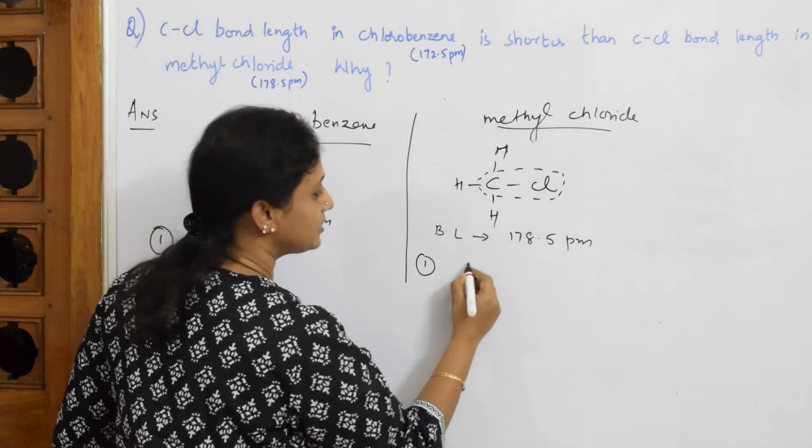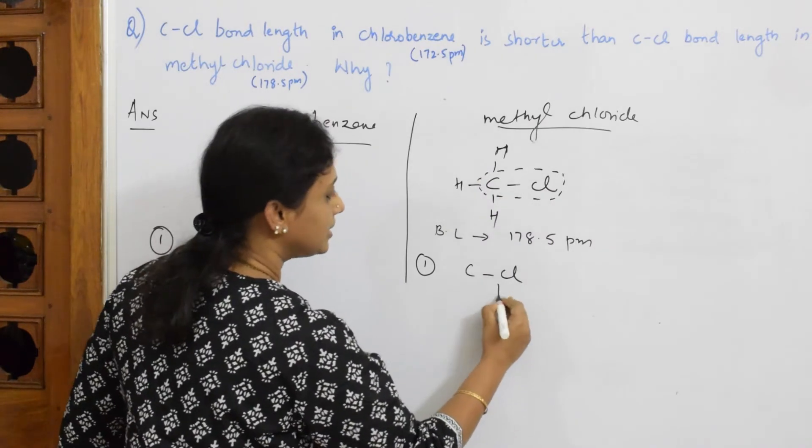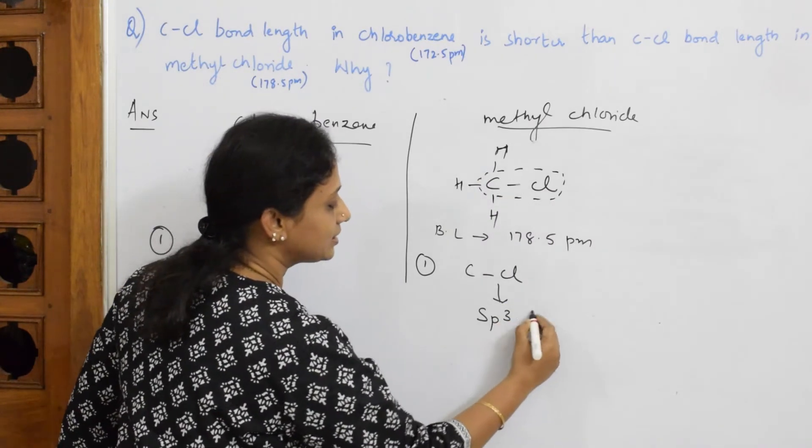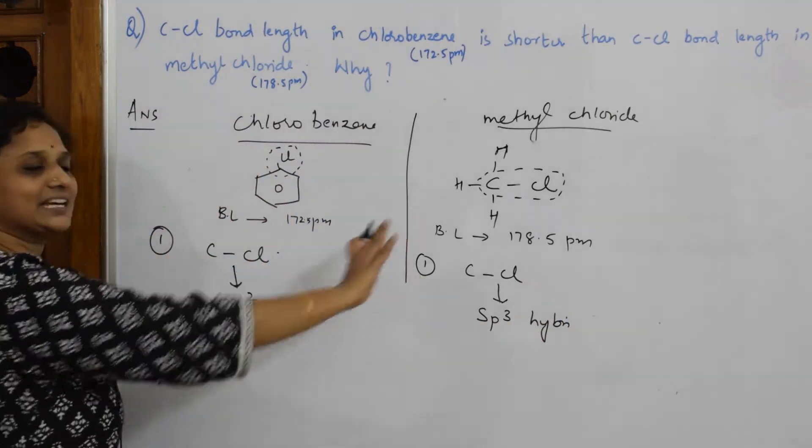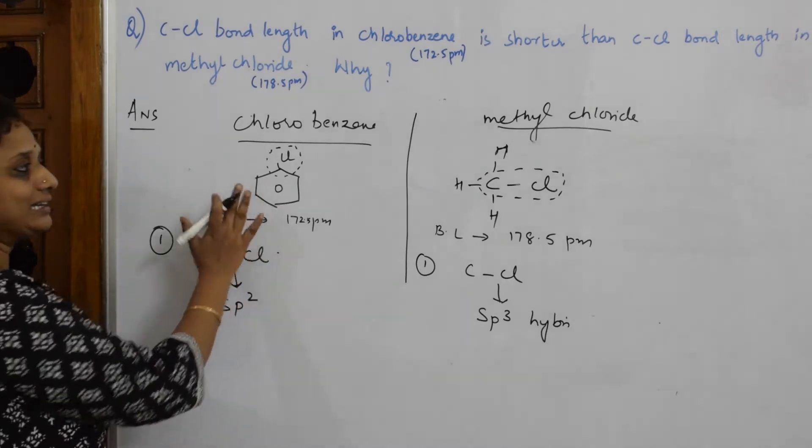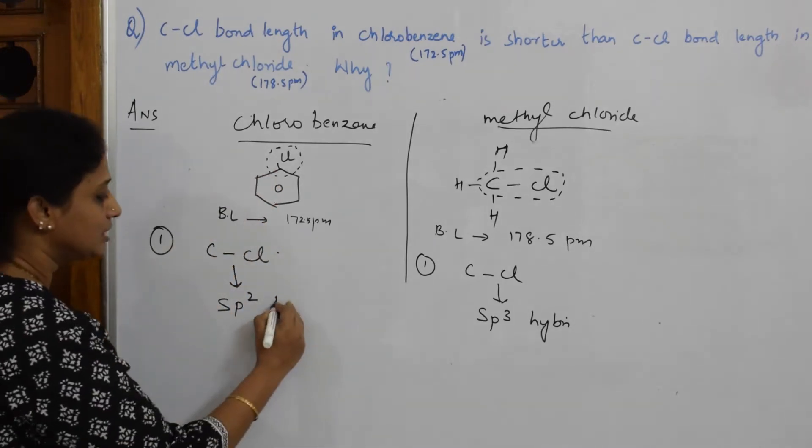And when I go to this carbon, all single bonds are observed, so the hybridization observed here is sp3 hybridization. You'll get half mark for this because you have clearly identified the type of hybridization.